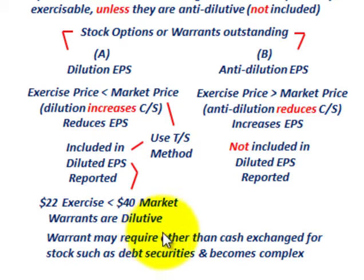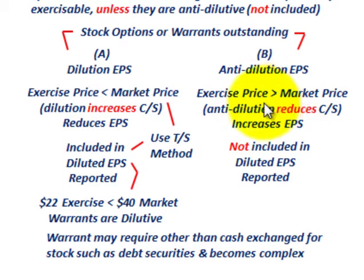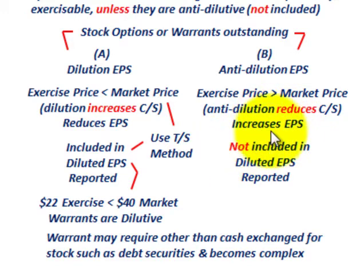There's also the case where warrants may require other than cash exchange to acquire the stock, such as debt securities, but that's a complex issue we won't deal with here — we're only looking at cash exchange. For anti-dilution of earnings per share, this is where the exercise price of the warrant would be greater than the market price. That would reduce the number of common shares outstanding, which would increase earnings per share. But we cannot include anti-dilutive warrants in earnings per share — they would not be included in the diluted earnings per share reported in the financial statements.